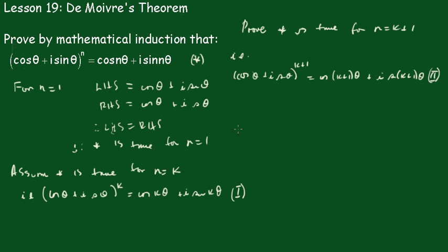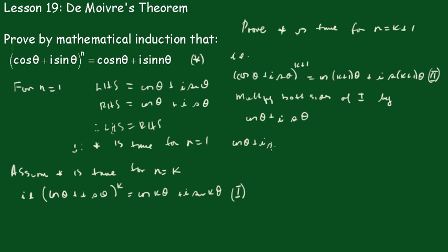Now I'm going to multiply both sides of equation (1) by (cos θ + i sin θ). This makes the left hand side the same as the left hand side of equation (2). So it becomes: (cos θ + i sin θ) to the power k+1 equals (cos kθ + i sin kθ) times (cos θ + i sin θ).